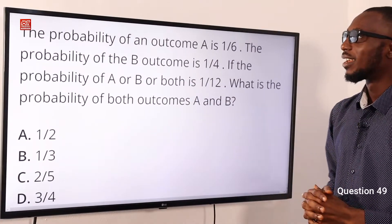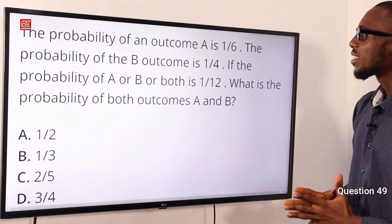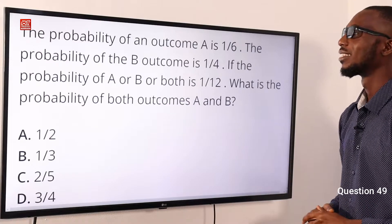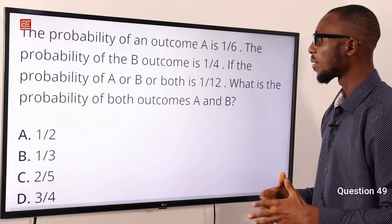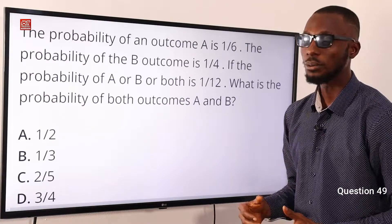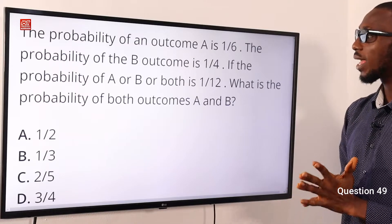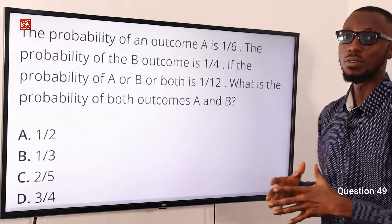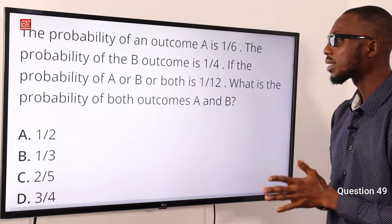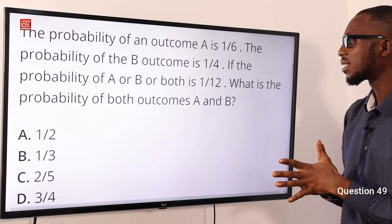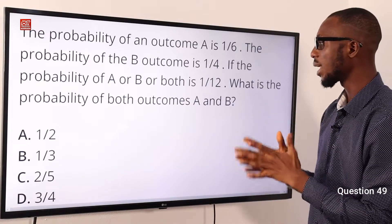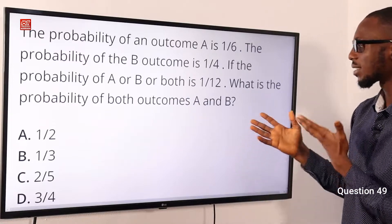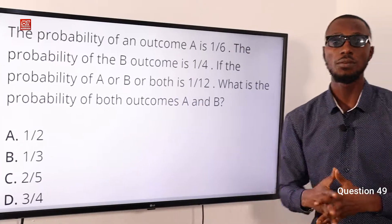Question 49. The probability of outcome A is 1 over 6. The probability of outcome B is 1 over 4. If the probability of A or B or both is 1 over 12, what is the probability of both outcomes A and B? That's telling us we should look for P(A and B).